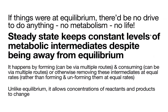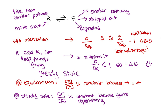What happens is you're forming that intermediate — which can be via multiple routes — and consuming it, which can also be via multiple routes, or otherwise removing those intermediates at equal rates. You're forming it and removing it somehow — by using it, by siphoning it off to another pathway, by taking it out of the cell — removing them at equal rates to the rate at which you're forming it. This is in contrast to equilibrium, where the rates of forming and unforming were equal.